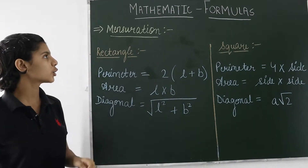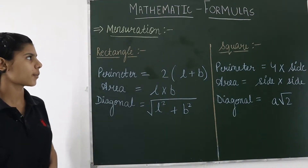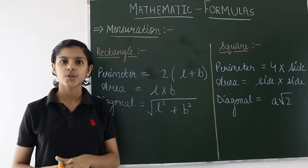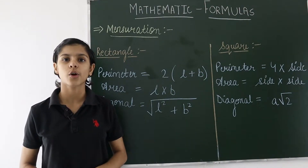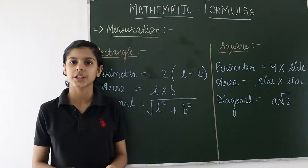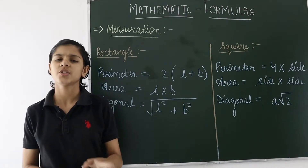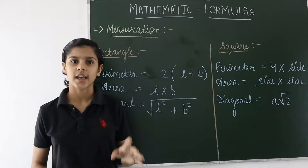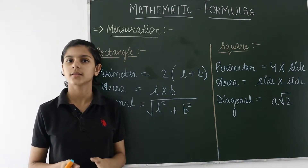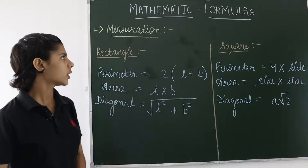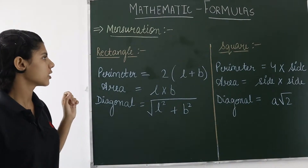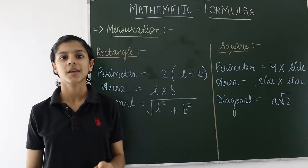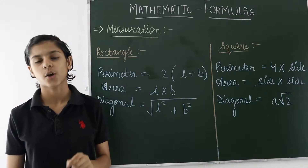The topic on which we will discuss the formulas is Mensuration. Mensuration basically consists of finding the perimeter, area, and measurements of different figures like rectangle, square, triangle, etc. In this chapter, firstly we will talk about rectangle and square, the most basic figures of this chapter.